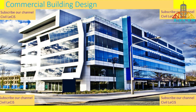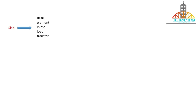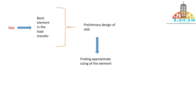We all know that slab is the basic element of a building that takes part in the load transfer mechanism. To get the approximate required size of the slab we need to do the preliminary design. Preliminary design is all about finding the approximate sizing of elements, for example slab, beam, or column. Before moving on to preliminary design of slab, you need to know the structural types of slab and load transfer mechanism in slab. This video covers types of slab and load transfer in slab.